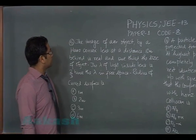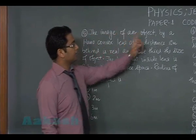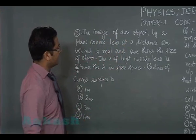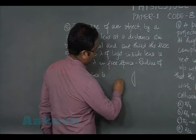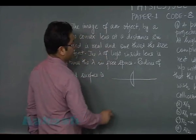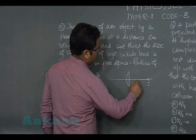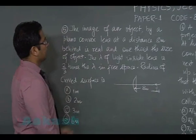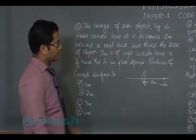Alright students, question number five is from ray optics. Image of an object by a plano convex lens at a distance 8 meters behind. So there is a plano convex lens and the image is at a distance 8 meters behind it. The image is real and one-third the size of the object.